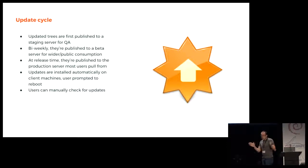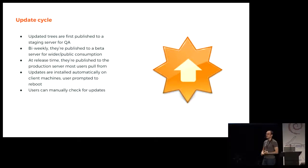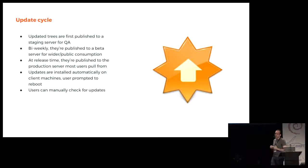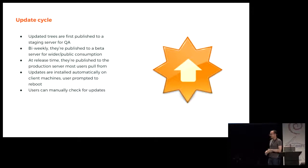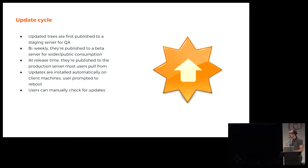In our deployment we have a three-stage server policy. When you build an OSTree, it's first published to a staging server that is internal — we use that to do our QA. We push from staging to a tree we call demo, which is public beta, roughly bi-weekly. Then at release time, when the beta passes the public QA and the staging passes the internal QA, we push everything to production — once a month for minor releases and once every six months for major releases.